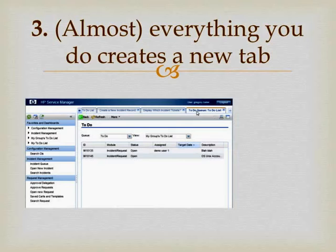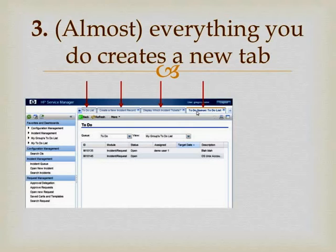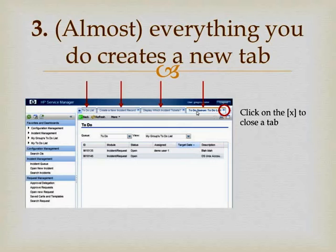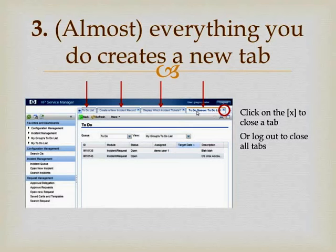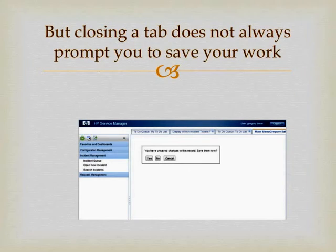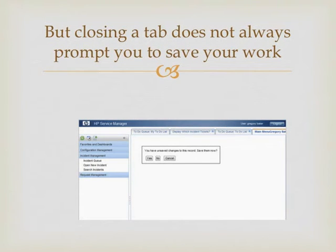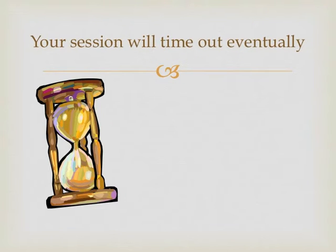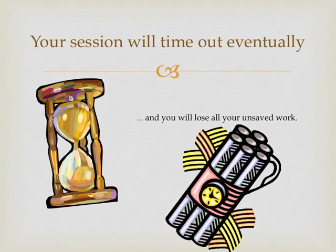Almost everything you do in Service Manager creates a new tab. If you click on a new module or a new search, you'll get a new tab. After about 15 of these, you'll get an error message saying that your web browser may be unable to cope with the number of tabs open. The system will slow down noticeably. To close tabs, hit the X button, or if you have too many open, you can log out and log back in to clear all tabs. Be aware that it's not guaranteed you'll be prompted to save your work when closing a tab — most modules like Service Desk and Incident do, but some more exotic modules do not. Your session will eventually time out, closing all tabs and losing all unsaved work.